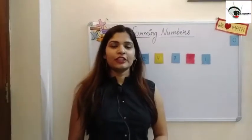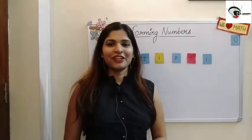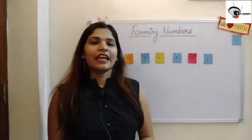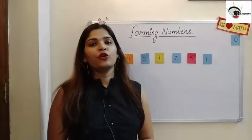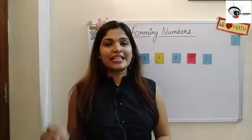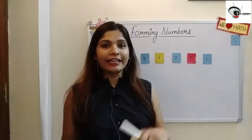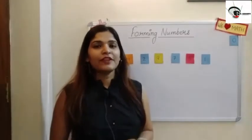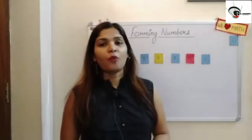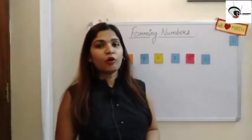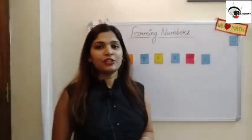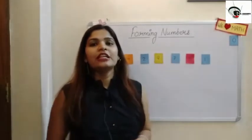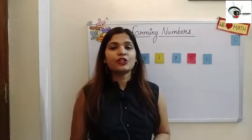Hello children, how are you all? In our previous video we learned how to arrange numbers in ascending order and descending order. Today we are going to learn how to form the greatest and the smallest number by using given digits. Let us recall our previous topic: a number is a combination of digits.